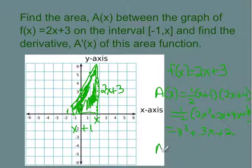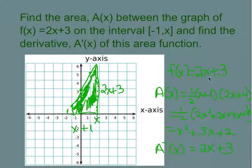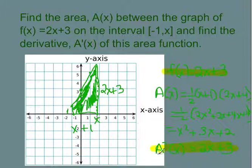Now we're going to take the derivative of the area. The derivative of x squared plus 3x plus 2 is going to give me 2x plus 3. I hope you don't think this is just a coincidence — I hope you're seeing the connection that when you take the area under the curve and then take the derivative of it, it brings you right back to your original function. This is a beautiful demonstration of the fundamental theorem of calculus, which connects and ties together the area under the curve with the anti-derivative.